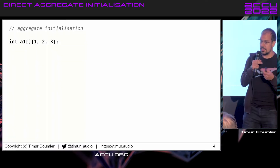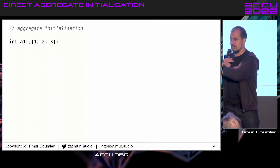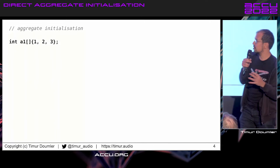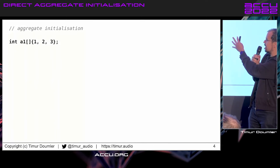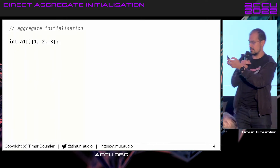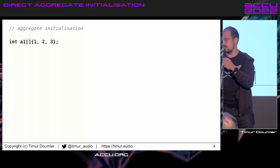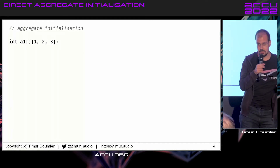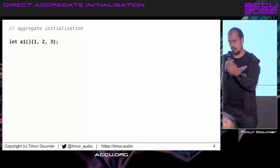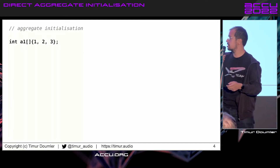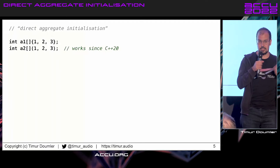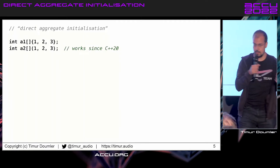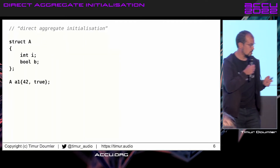Yes, I'm showing code in the lightning talk. We have an array which is an aggregate type and we can initialize this with braces — that works — but then in C++20 you can actually initialize that with parens as well, so that compiles in C++20.